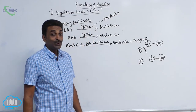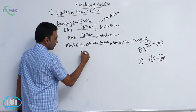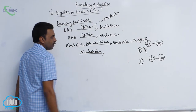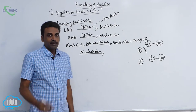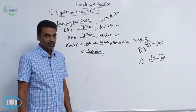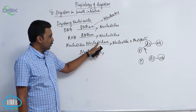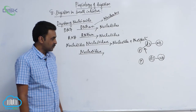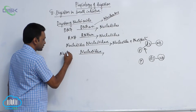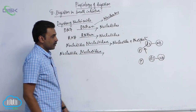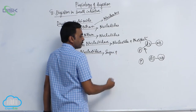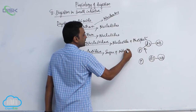Nucleosidase, which also comes from intestinal juice, acts on the nucleosides. It breaks the bond to separate the sugar — whether ribose or deoxyribose — from the nitrogen base. So nucleotidase and nucleosidase both come from intestinal juice.